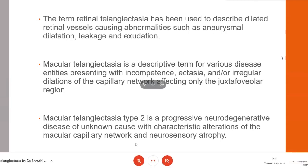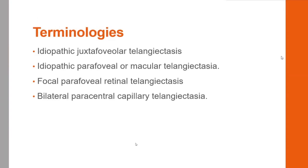Macular telangiectasia type 2 is a progressive neurodegenerative disease of unknown cause with characteristic alterations of the macular capillary network and neurosensory atrophy. Various terms have been used to describe this disease such as idiopathic juxtafoveolar telangiectasia, idiopathic parafoveal or macular telangiectasia, focal parafoveal retinal telangiectasis, or bilateral paracentral capillary telangiectasia.